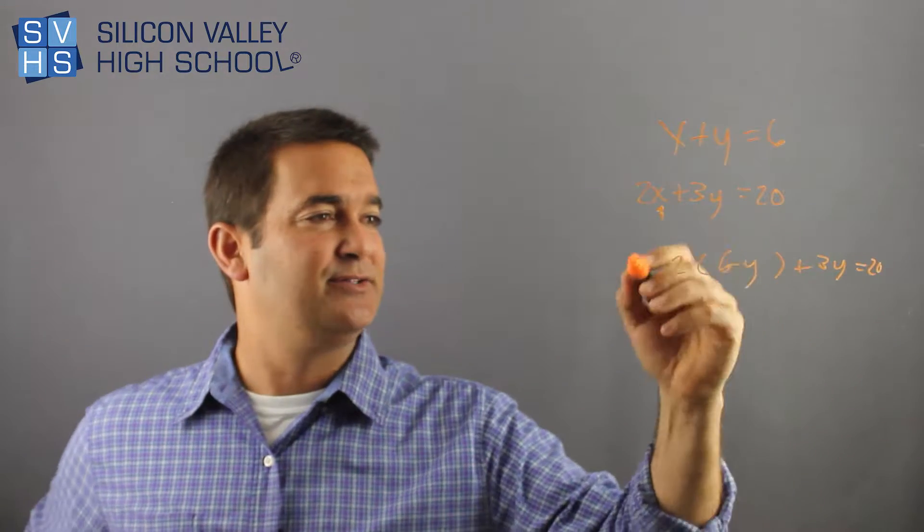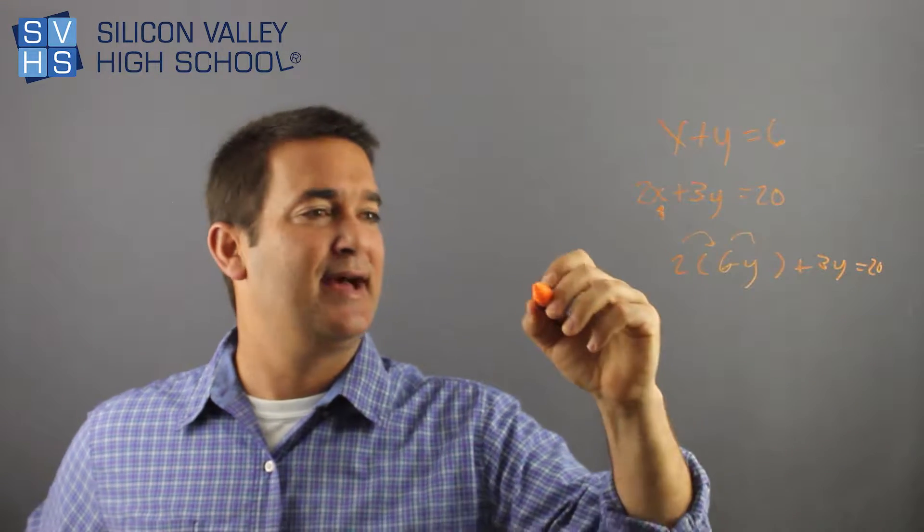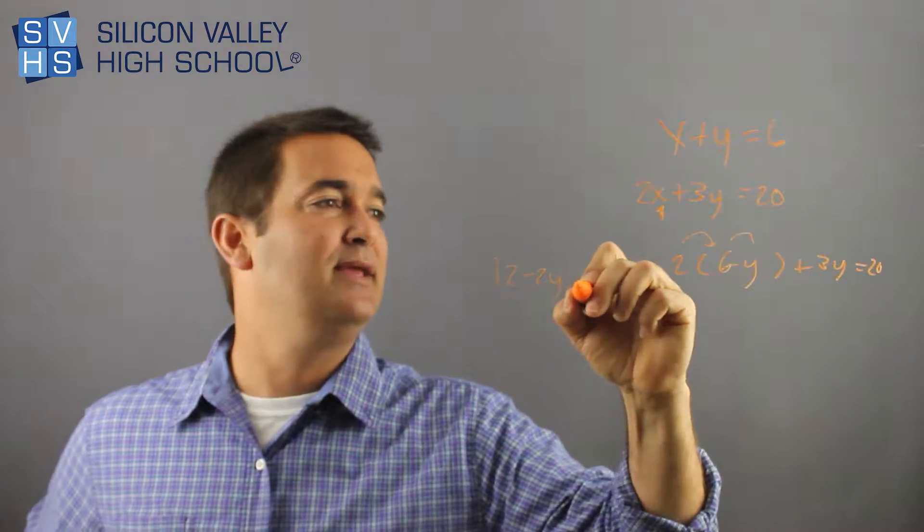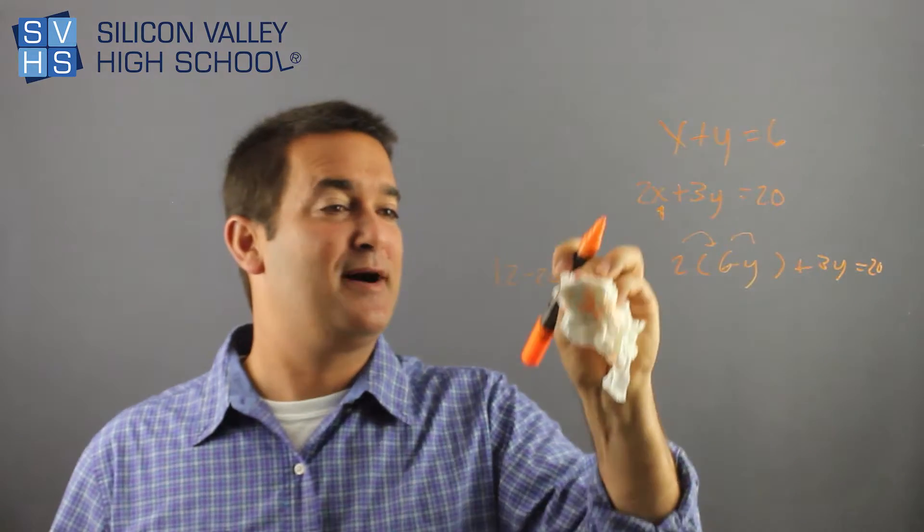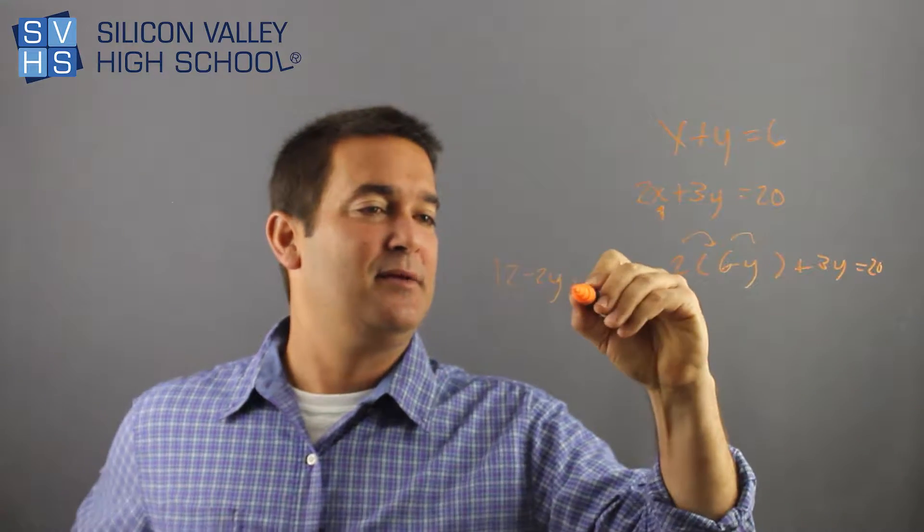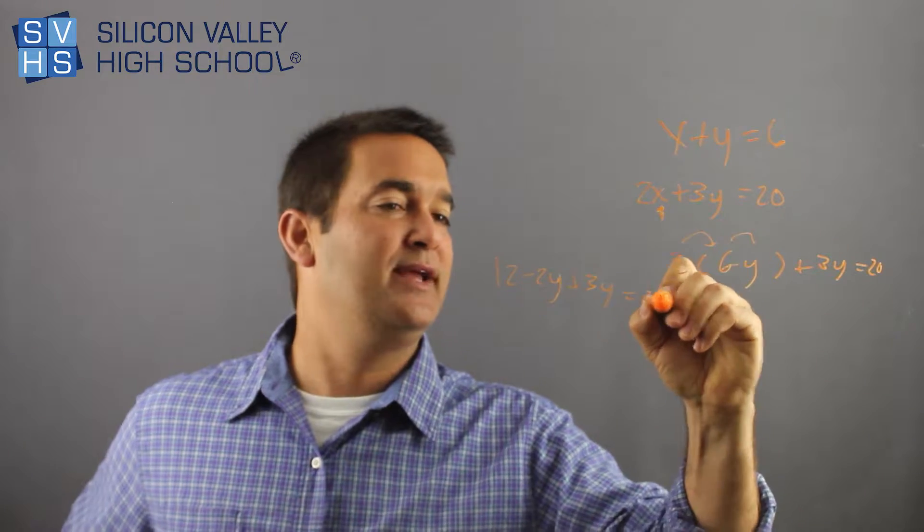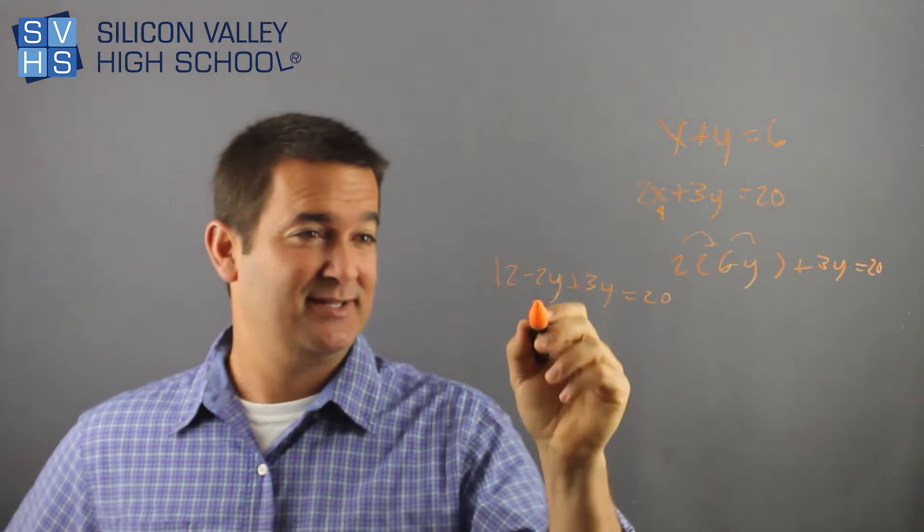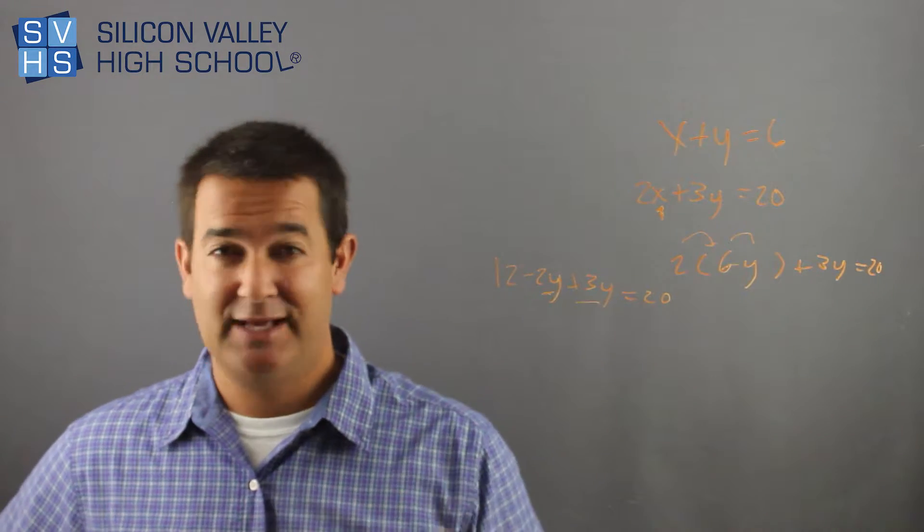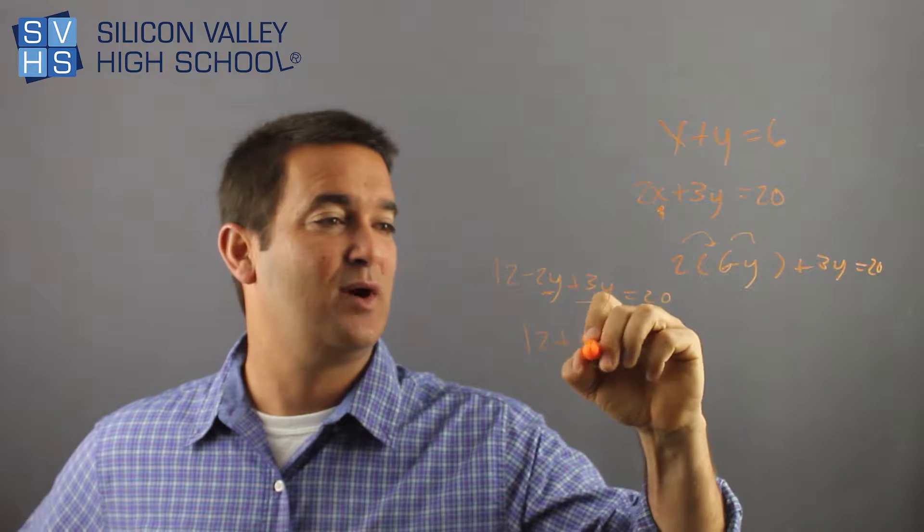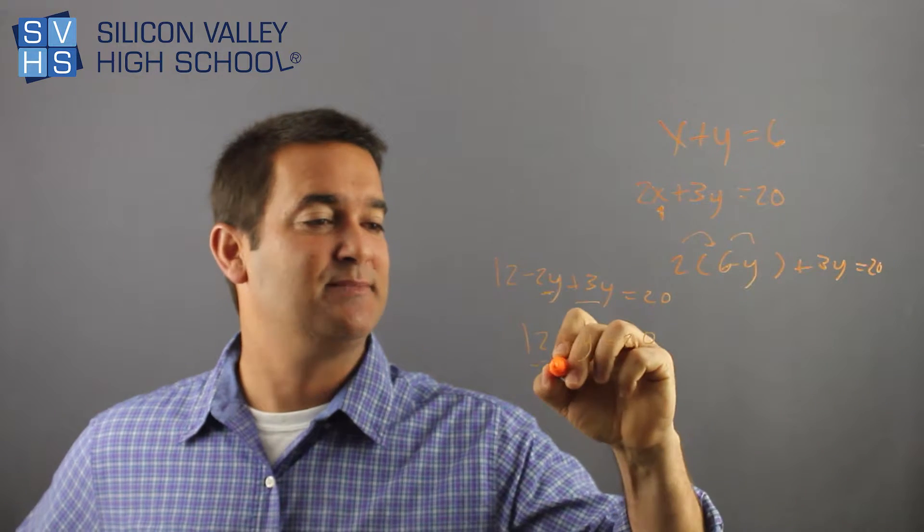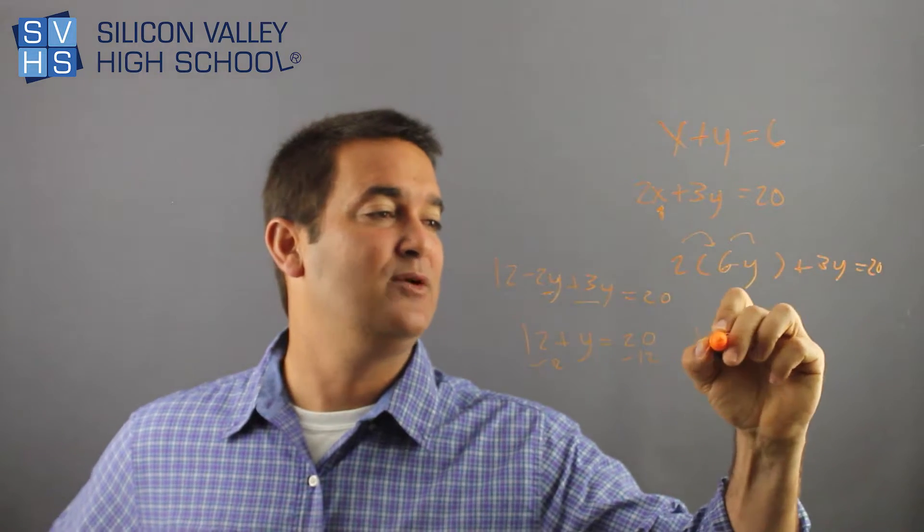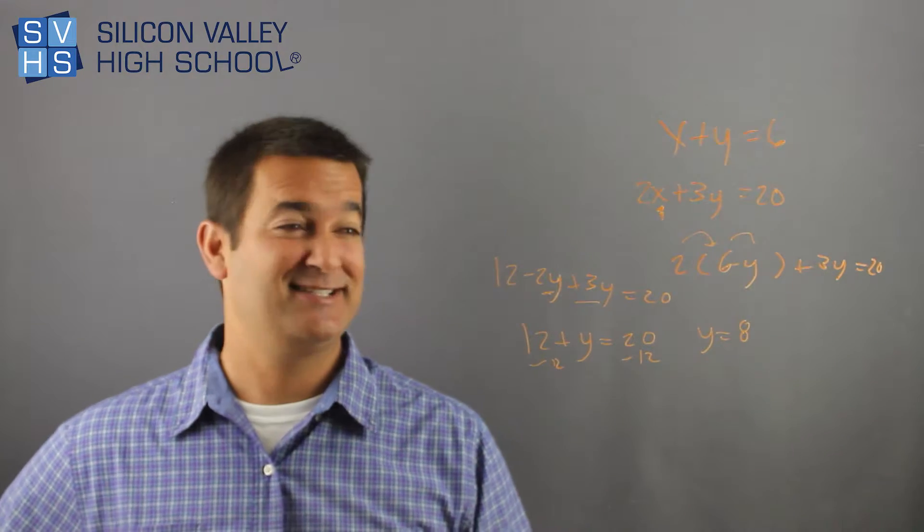And now I distribute my 2. So distributing to both, I get 12 minus 2y plus 3y equals 20. Adding like terms, these little suckers right here, negative 2y and 3y, that's just y. 12 plus y equals 20, minus my 12, minus my 12, y equals 8. That's very exciting.